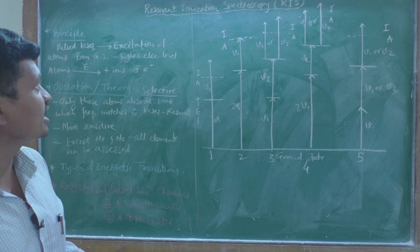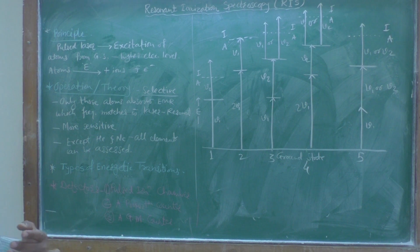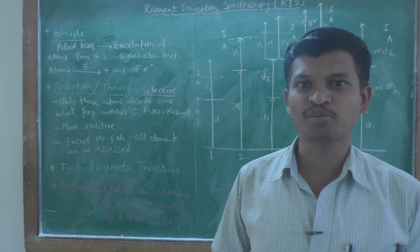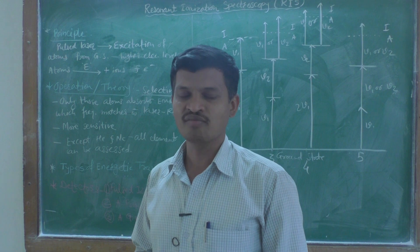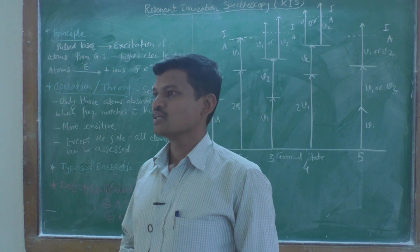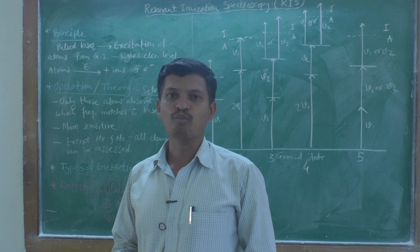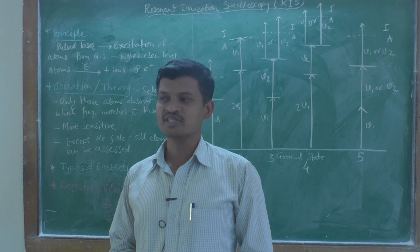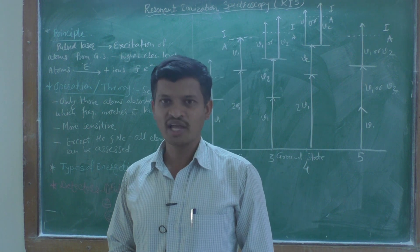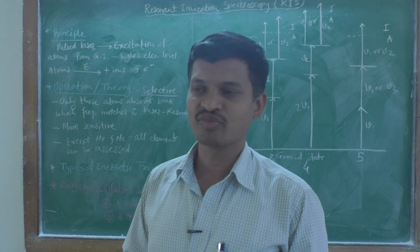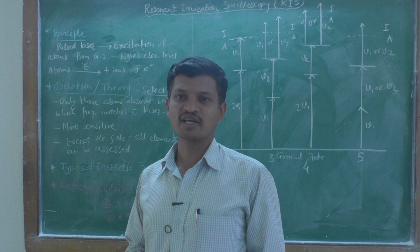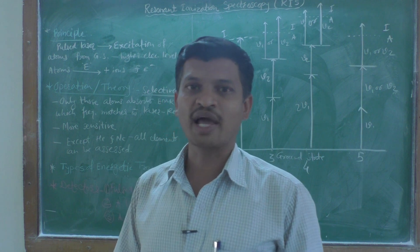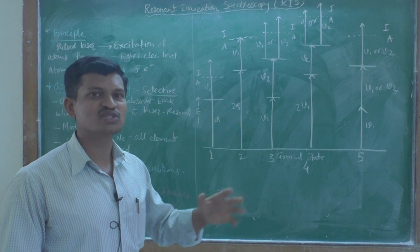The principle is very simple — it is just like atomic fluorescence spectroscopy but with a minor difference. That minor difference gives us a much better analysis of most elements present in different analyte samples. Except for helium and neon, which are the two inert gases, most metals as well as many other elements can be detected and analyzed using resonant ionization spectroscopy.